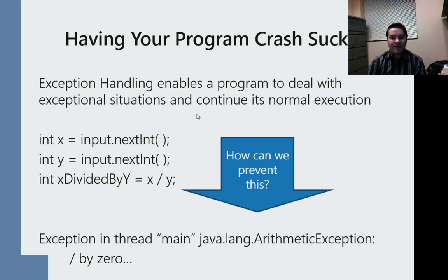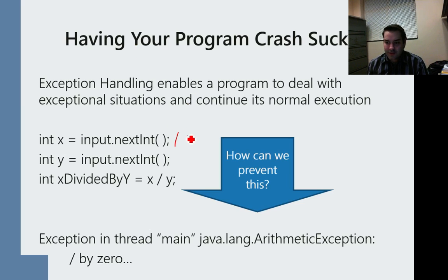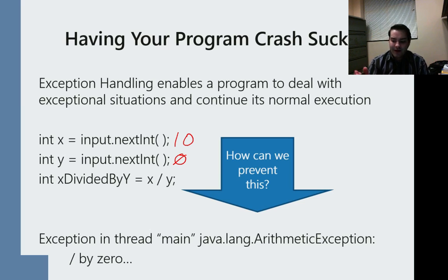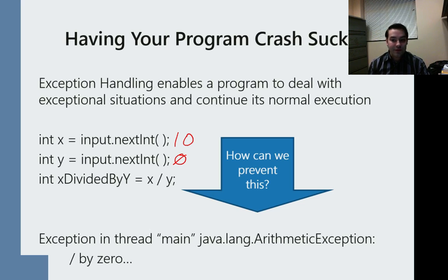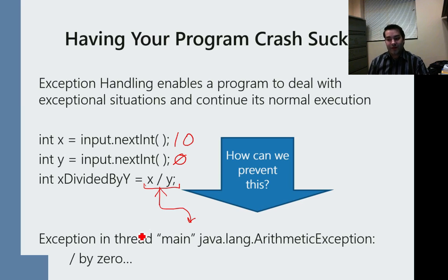Here's an example of that. Say I've got my user inputting some numbers that I plan on dividing. Say they do a 10 here, but when they go into their y, they say zero. If you've taken a math class in the past century, you know that you cannot divide by zero — that's just one of those laws of math. So what would happen is my program would run and execute perfectly fine, but as soon as it hit this division, I would get an exception because we can't divide by zero.